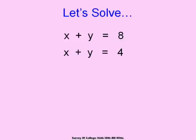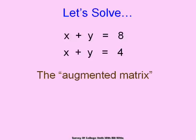Let's look at this one. The first thing we would do if I gave you this system — I hope you appreciate if I asked you to solve it with a matrix — is that you would create the matrix. Remember that x is 1x and y is 1y. So we'd represent this with the matrix I've shown here: the four ones and the eight and the four.